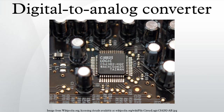Most DACs rely on a constant reference voltage to create their output value. Alternatively, a multiplying DAC takes a variable input voltage for their conversion, which puts additional design constraints on the bandwidth of the conversion circuit.